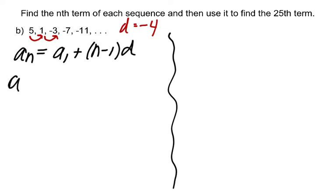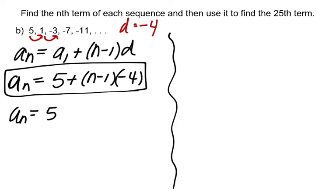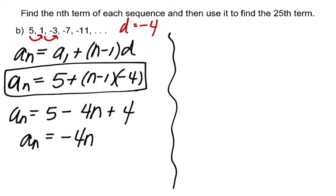Our formula is: a sub n is equal to a sub 1, which is 5, plus n minus 1 times d, and my common difference is negative 4. This is acceptable as is, or you could distribute to simplify: 5 plus negative 4n plus 4. So a sub n equals negative 4n plus 9 in simplified form.